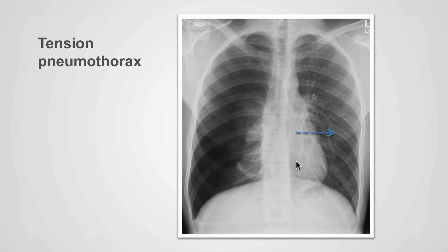A tension pneumothorax is a pneumothorax that has increased in size significantly and is now causing displacement of the mediastinal structures to the contralateral side. When this happens, there can be cardiovascular compromise and this is a medical emergency.